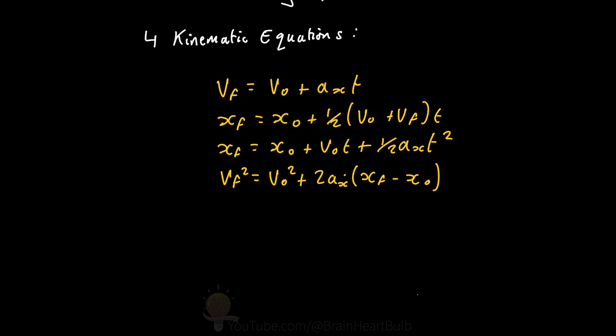But the main components here are the initial and final velocities, the constant acceleration, the time, and the position of the objects, the final and initial positions. So given that we want to find the final velocity of our car, and we know that the initial velocity is zero, what equation would be best to use in this situation?